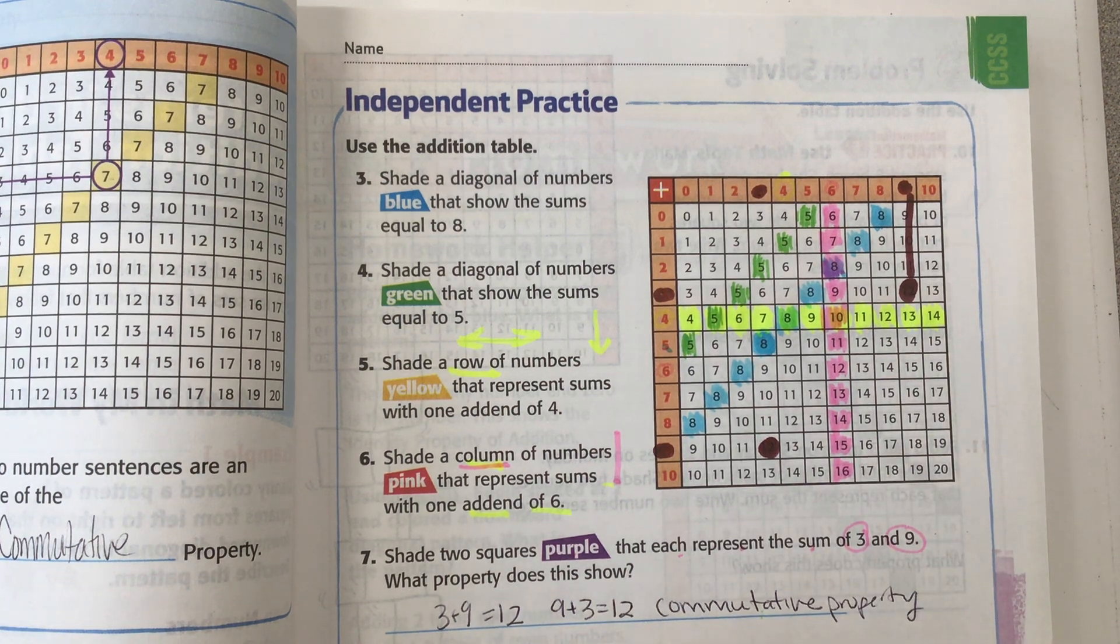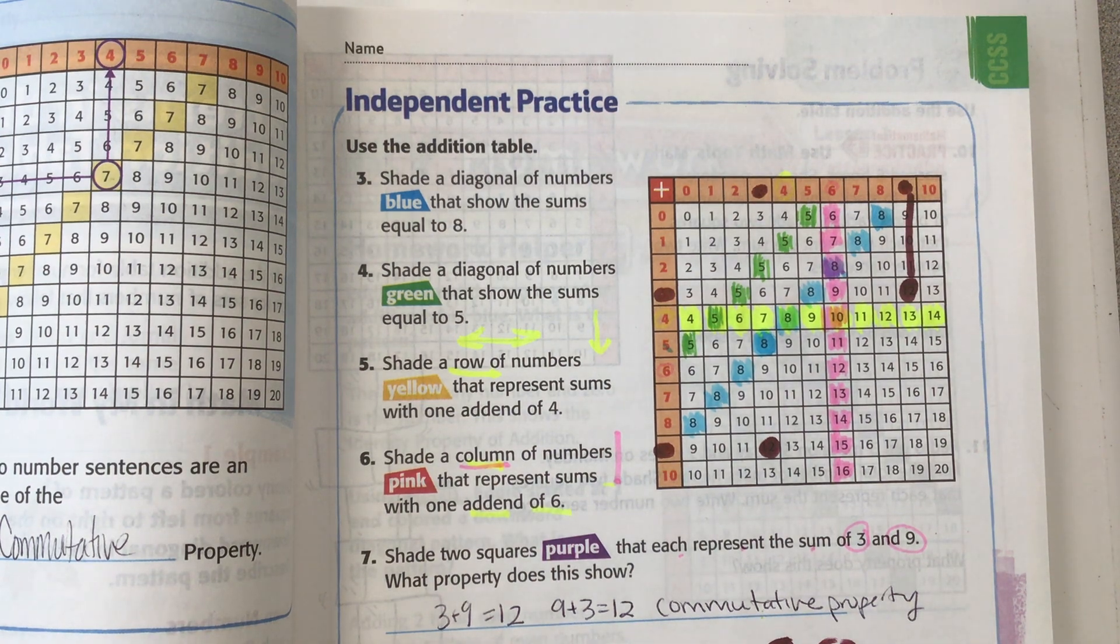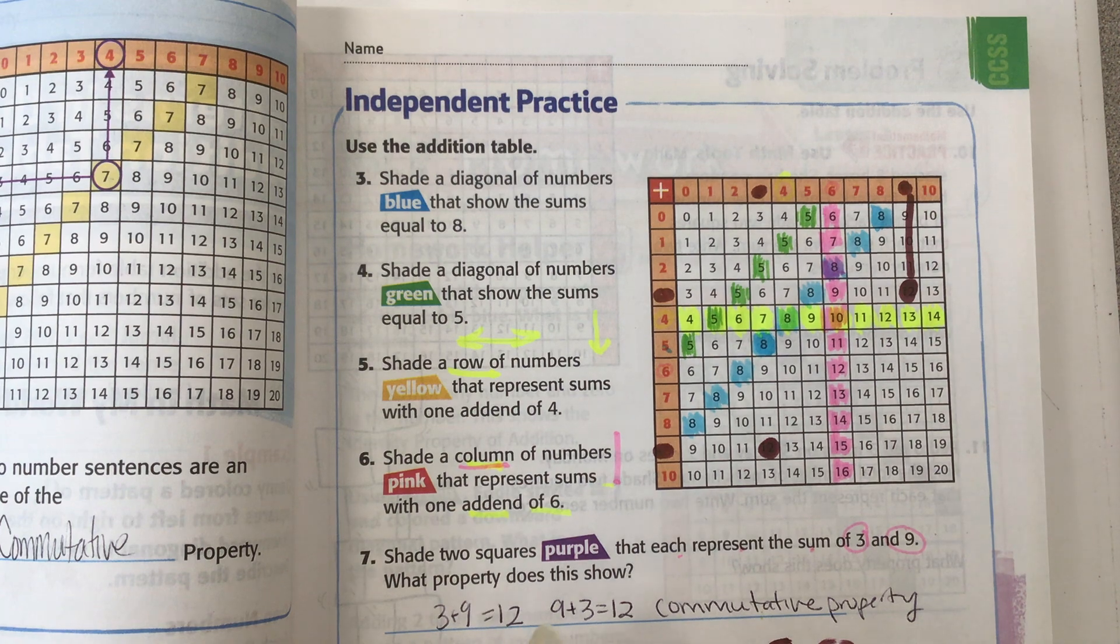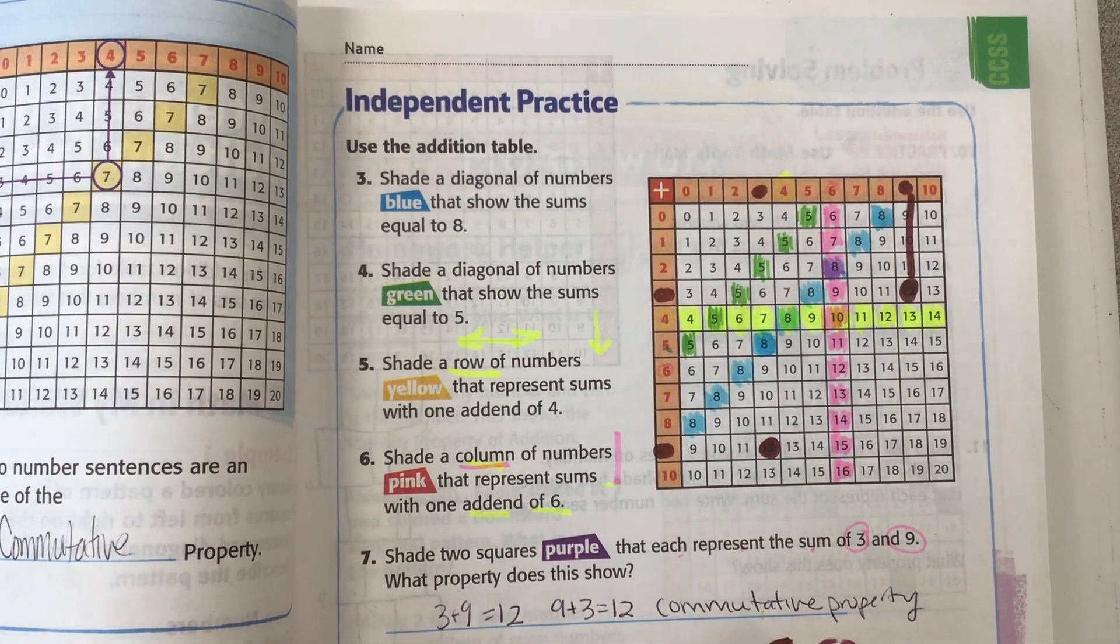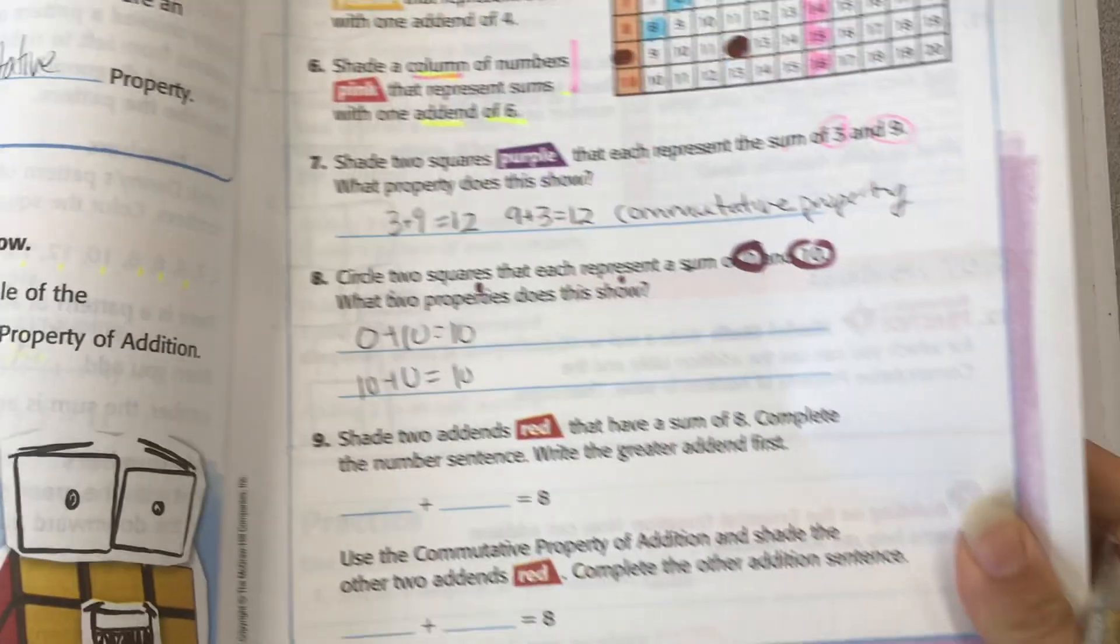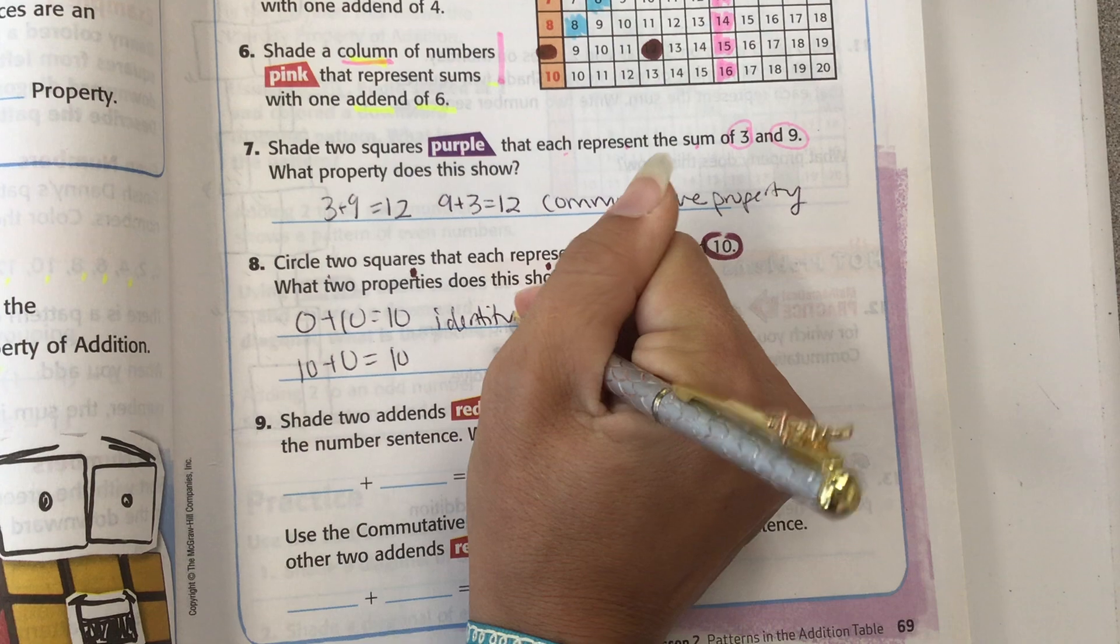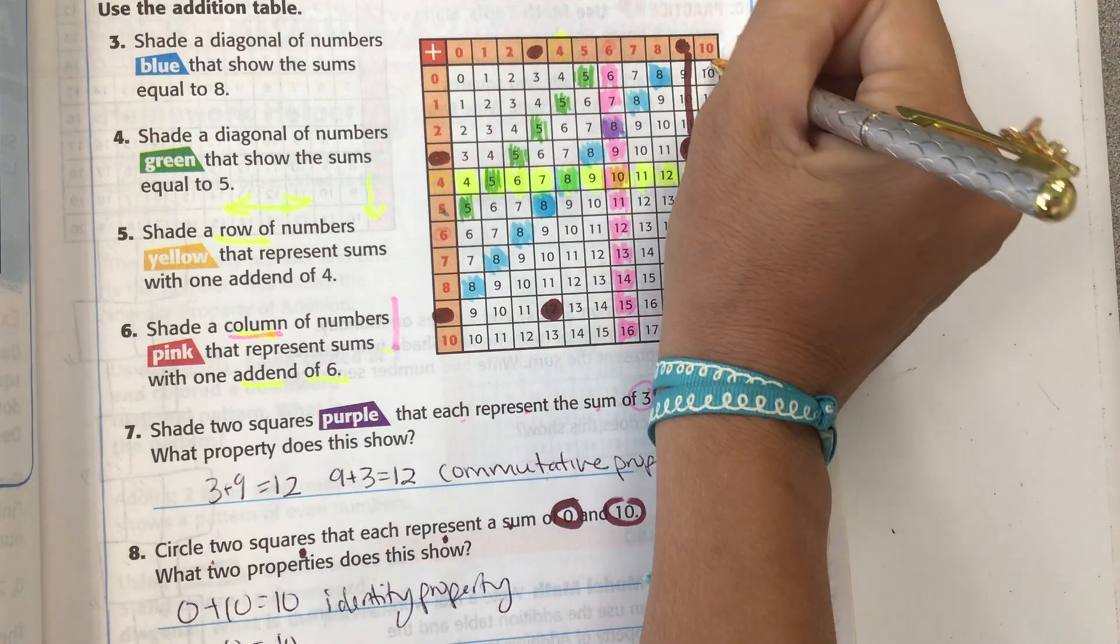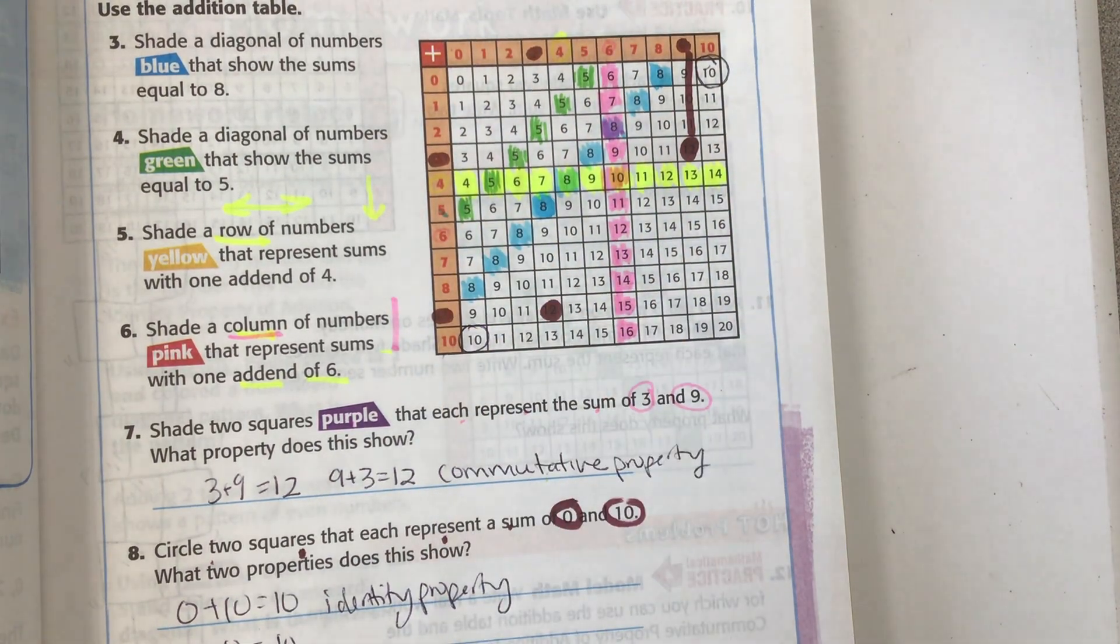Circle two squares that each represent a sum of zero and ten. So I'm just going to use my pen this time. And we need zero plus ten equals ten, and ten plus zero equals ten. And we remember when we have a zero, it's called the identity property. And we're going to find the zero and the ten here. Still ten. Zero plus ten is ten. Circle those.